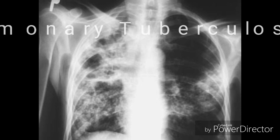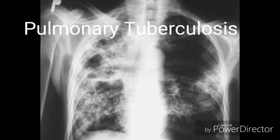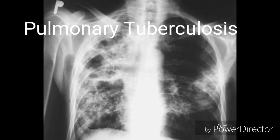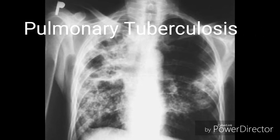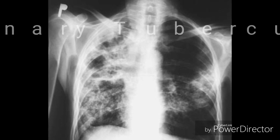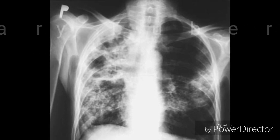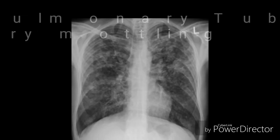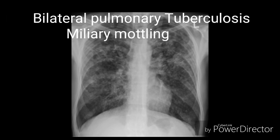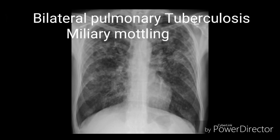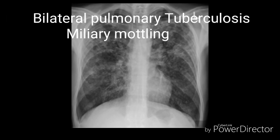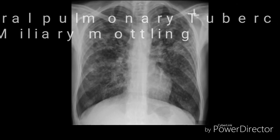This is the X-ray of pulmonary tuberculosis showing involvement of the whole of the right lung as well as some portion of the left lung. This is another X-ray of pulmonary tuberculosis showing miliary mottling involving the right lung as well as the left lung.